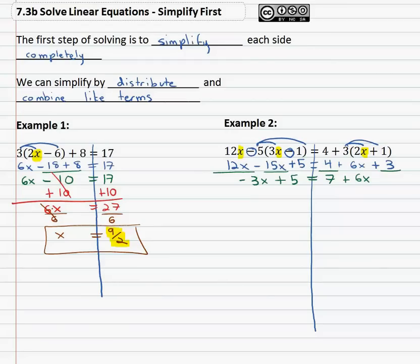Well it's simplified now but the variable is on both sides. We need to get it on the same side. I like to move the smaller one the negative 3x though technically it does not matter. To get rid of a negative 3x we need 3 positive x's. And now that we're solving we're doing the same thing to both sides adding 3x to both sides. That gives us 5 is equal to 7 plus 6 plus 3 is 9x.